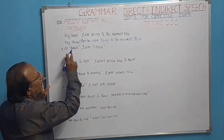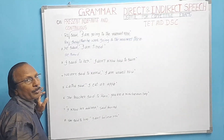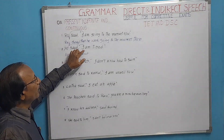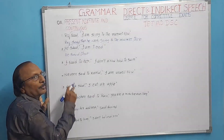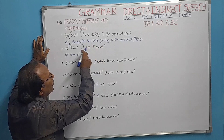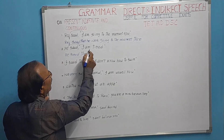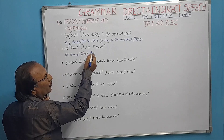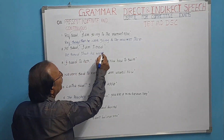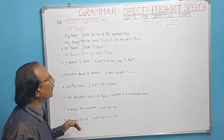He said, 'I am tired.' Here 'I' refers to 'he.' Write 'He said' as it is, remove the comma and inverted commas, and add the conjunction 'that.' The reported speech is 'I am tired' — the actual words of the reporter he. As per our rule, simple present changes into simple past. 'I am' becomes 'he was.' So the indirect speech is: He said that he was tired.